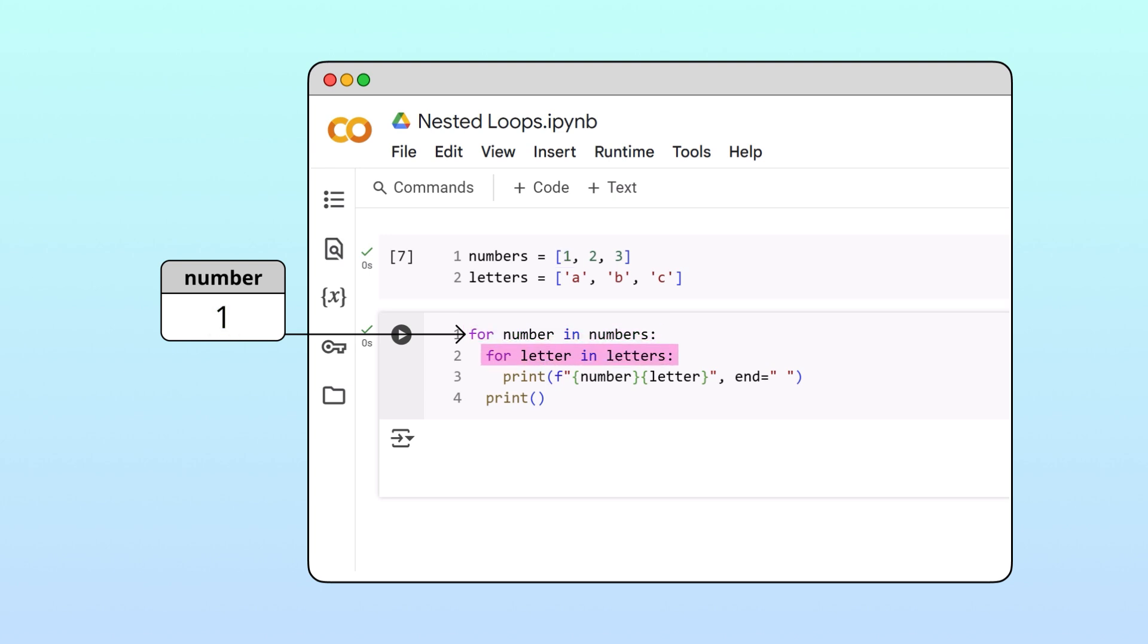Next, Python moves into the outer loop's body and executes the inner loop's header. Here, Python sets the letter iteration variable equal to a, which is the first item in the letters list. Then, Python moves into the inner for loop's body and prints the number and letter variables.